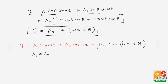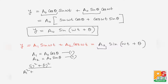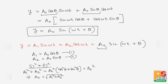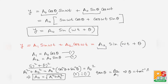Now, since a1 = a0·cosθ and a2 = a0·sinθ, squaring and adding both equations gives a1² + a2² = a0²(cos²θ + sin²θ) = a0². Therefore, a0 = √(a1² + a2²). Dividing equation 2 by equation 1 gives tanθ = a2/a1, so θ = tan⁻¹(a2/a1).